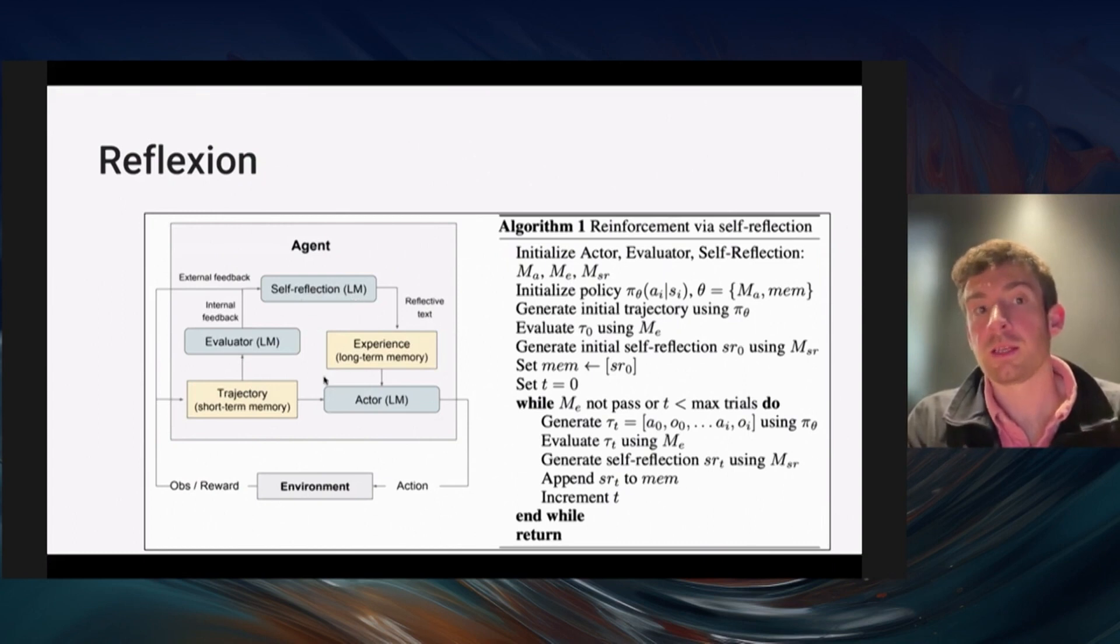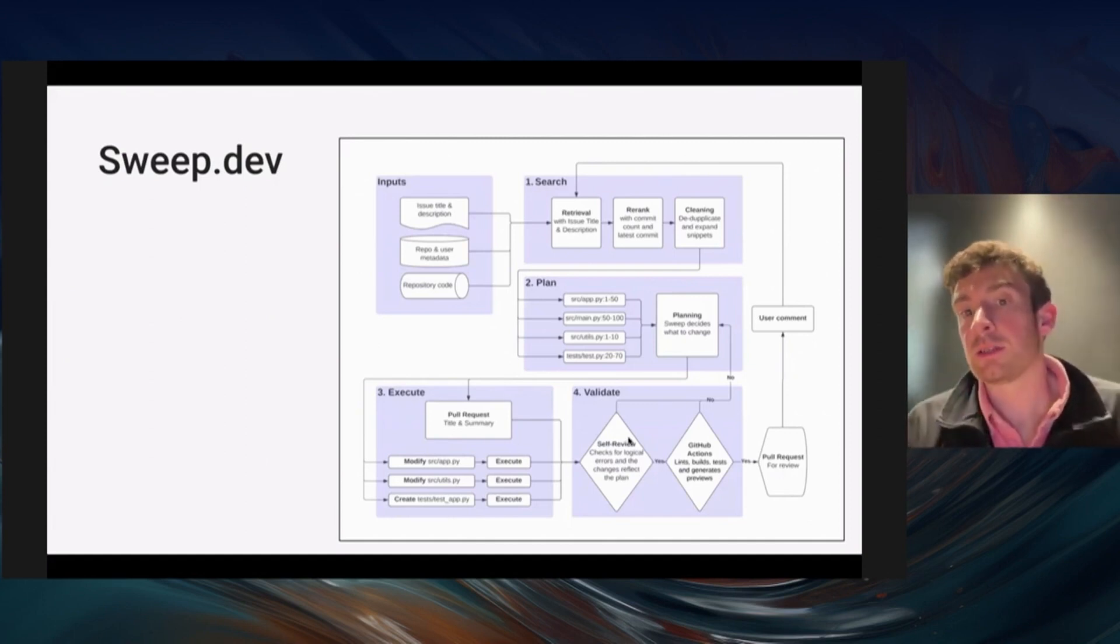To ground it in a real-world example, we've got Sweep.dev, which is a coding agent. It very explicitly has this plan-execute-validate cycle and it can cycle between these until it's finished. The basic idea here is that you have explicit steps for planning and validating or whatever you want, and breaking it down into these distinct stages makes it easier for the language model to reason about what to do.